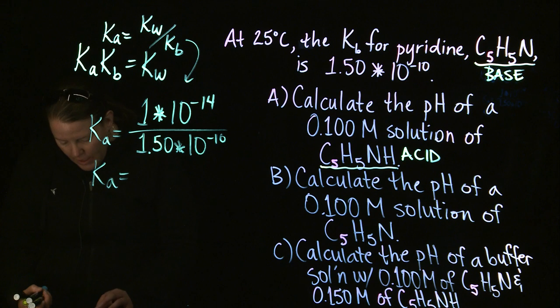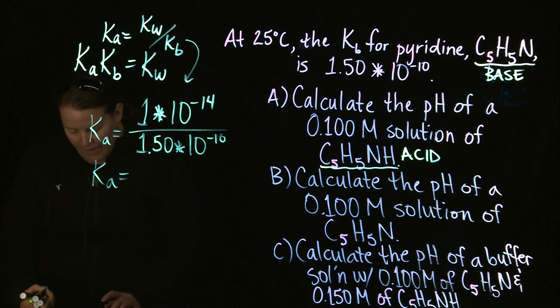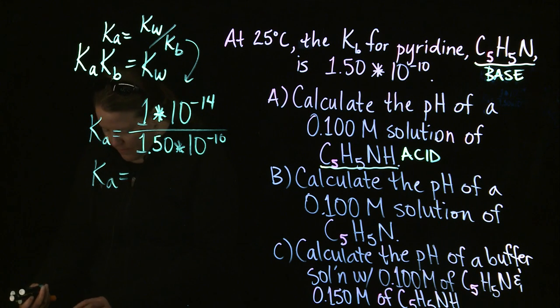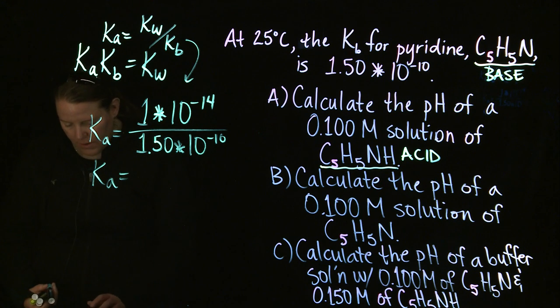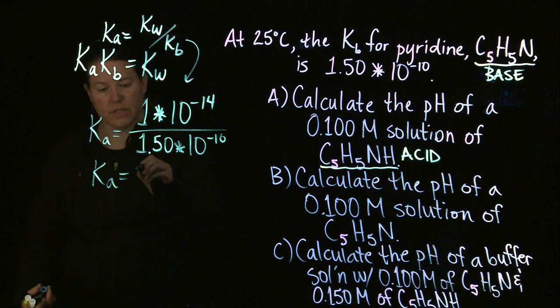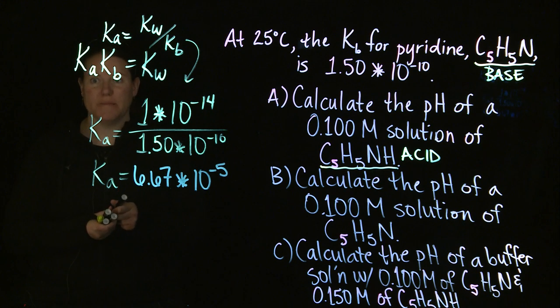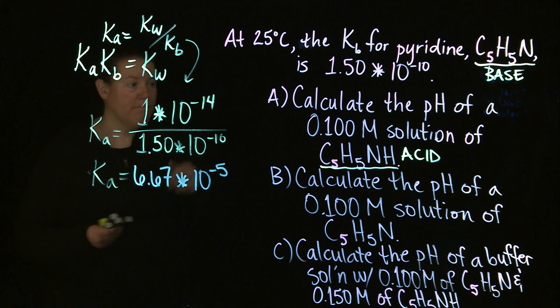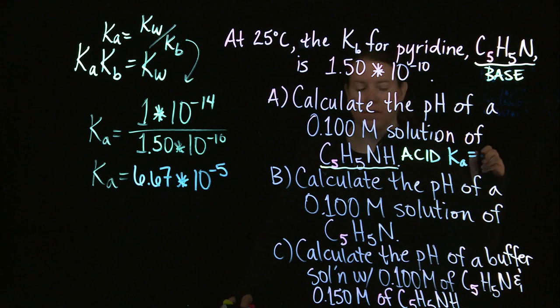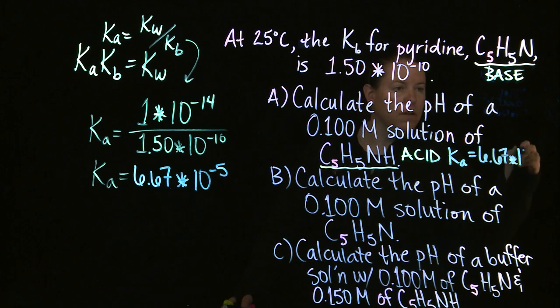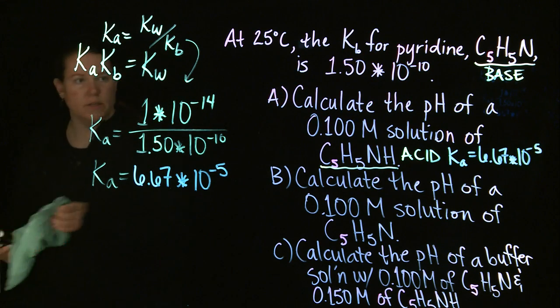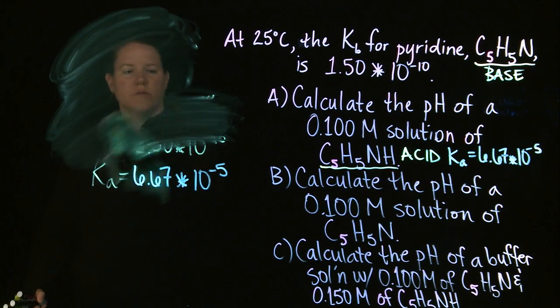Let's do this. 1 e negative 14 divided by 1.5 e negative 10. I got a cool number. Sometimes your calculator works with you, and sometimes it really doesn't. Let me do that one more time. It is 6.67 times 10 to the negative 5th. Just went from a Kb to a Ka. That was pretty nice.